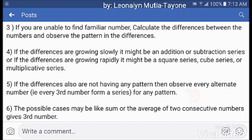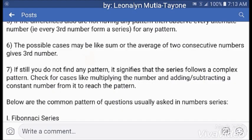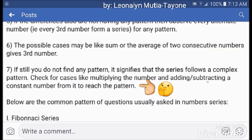Tip 5: If the differences also don't have any pattern, then observe every alternative number — like every third number from a series — for any pattern. Tip 6: The possible cases may be like the sum or average of two consecutive numbers gives the 3rd number. Tip 7: If you still do not find any pattern, it signifies that the series follows a complex pattern. Check for cases like multiplying the number and adding or subtracting a constant to reach the pattern.